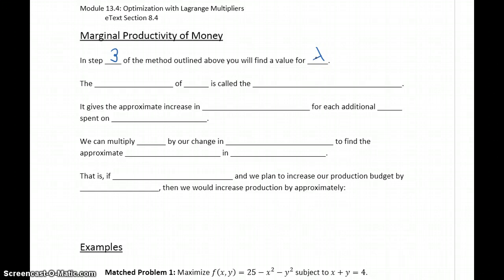We'll also find values for x and y. We're going to solve for all three of those variables, but we'll have a value for lambda. The negative of that value lambda, or the opposite of whatever we come up with for lambda, is called the marginal productivity of money.